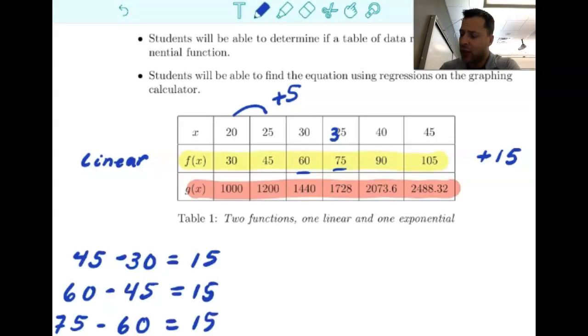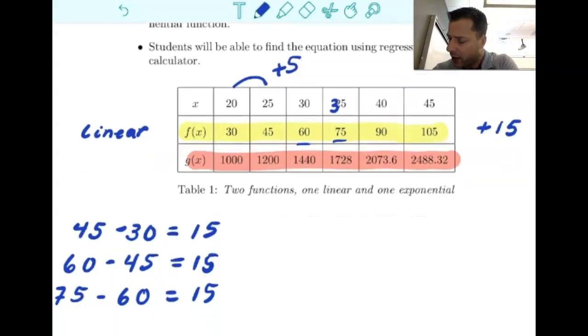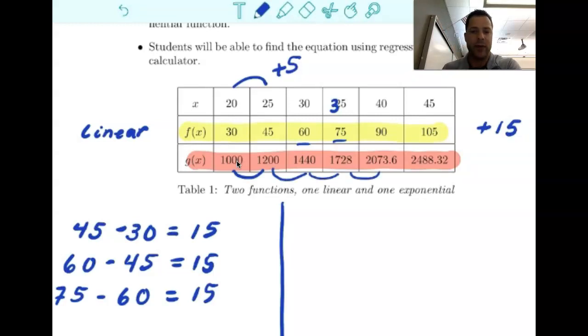So what happens if we look at the red graph here? We start looking, and hopefully you notice that from here to here, it's a 200 difference. There's a 240 jump, and then almost 300, and then it starts to get quite a bit larger. So the numbers are getting larger here.